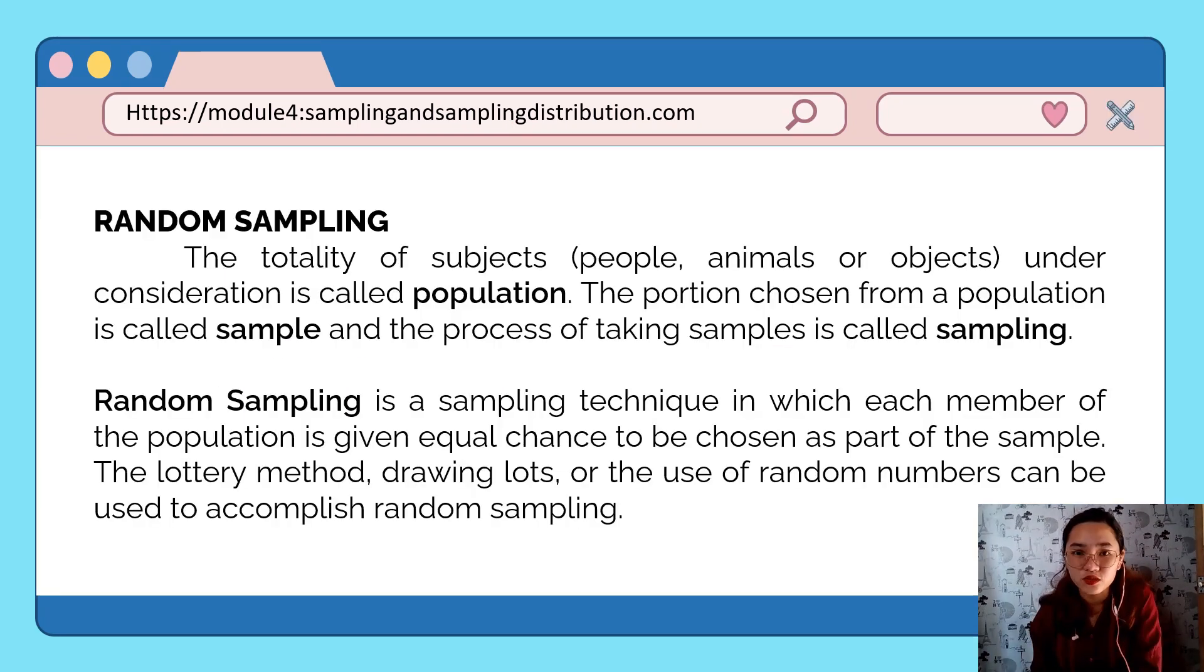So what is population? It is the totality of subjects under consideration. This is the total number of your subjects under your research or study. This could be people, animals, objects, or situations, depending on what you are studying.